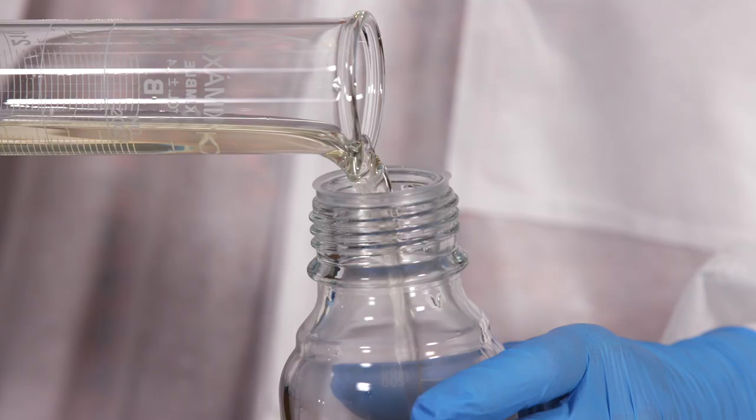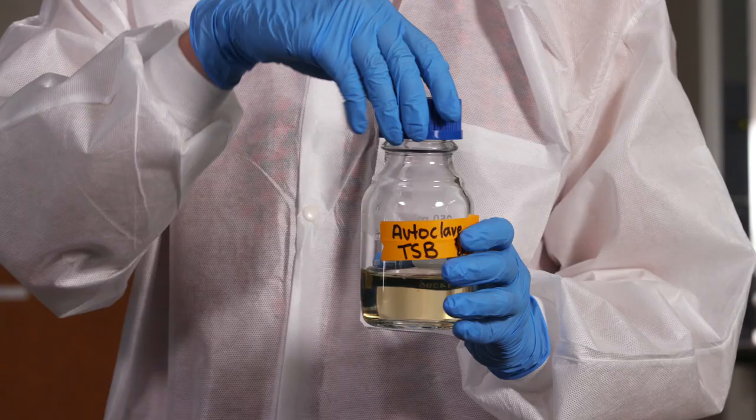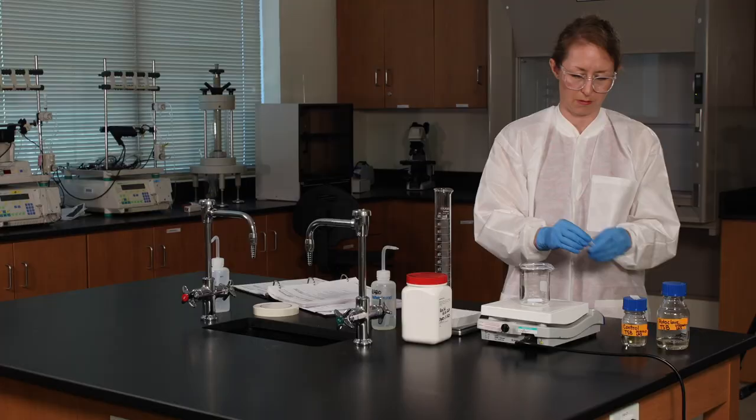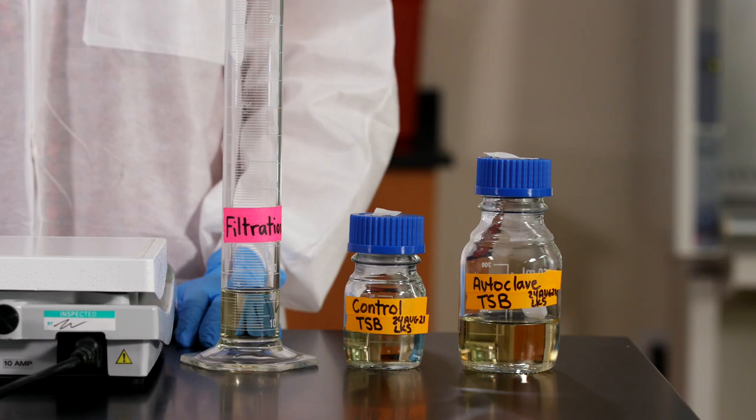Pour another 40 ml of broth into a second bottle, loosely cap it, and add a piece of autoclave tape. Label it autoclave.